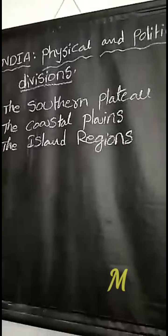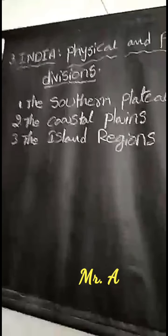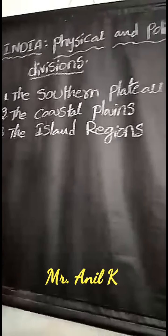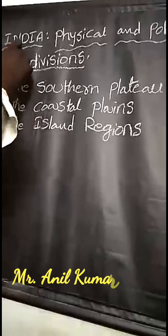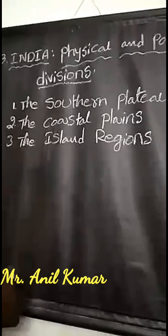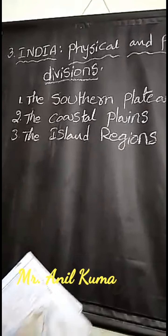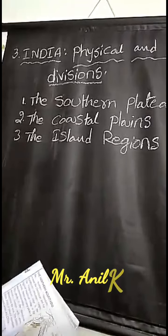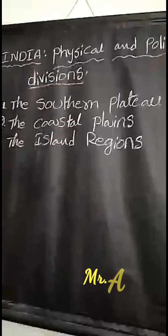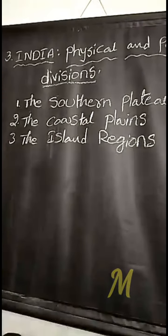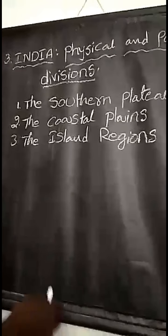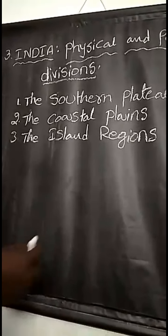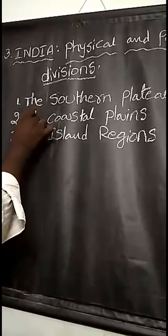Dear children, how are you all? Hope all are fine. Last week we discussed lesson number three, Class 3 - India: Physical and Political Divisions. We finished only the first half last week, covering natural mountains and natural plains and the Indian desert. Today we are going to discuss the remaining parts: the southern plateau, the coastal plains, and the island regions.